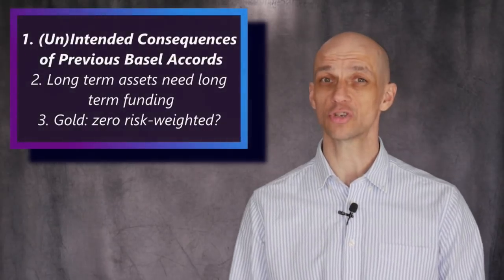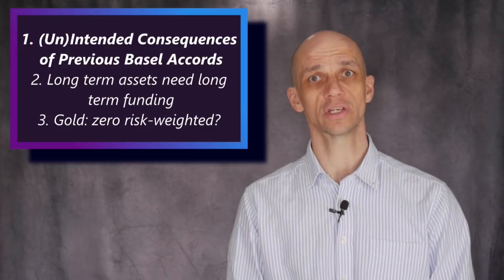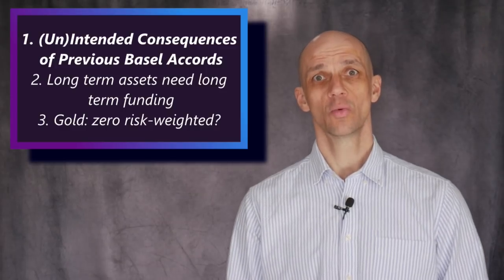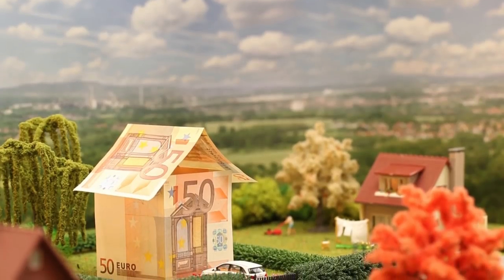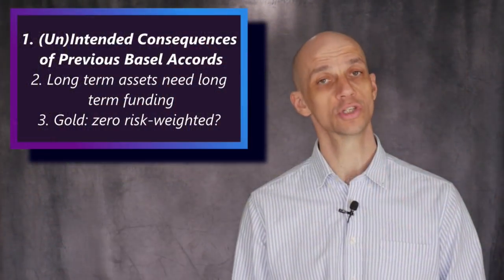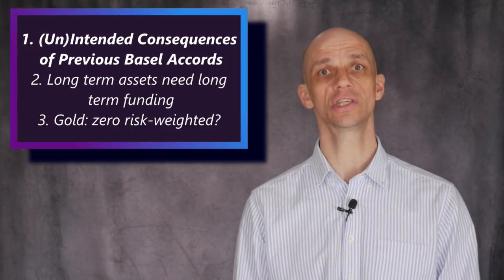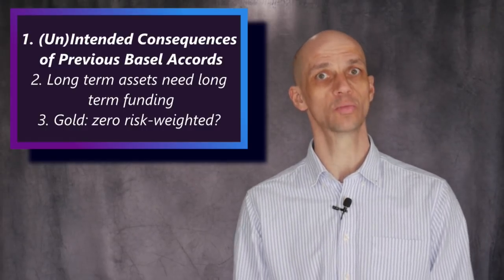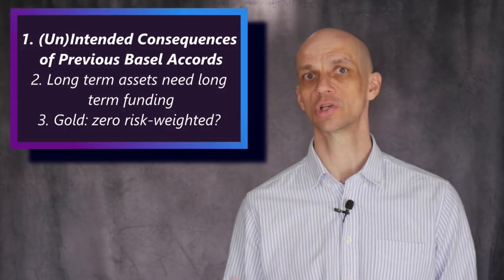Previous Basel Accords have had a dramatic impact upon economies globally. Each previous round of the Basel Accord has deemed mortgage debt to be increasingly less risky — in Basel 1 in 1992, 50% risk weightings were applied to mortgages. Basel 2, agreed in 2004, saw the risk weighting of mortgages reduced to 35%, and they then allowed banks to calculate their own internal risks. House prices really took off throughout the western world as credit flowed to real estate markets, before that sudden contraction in credit took place.